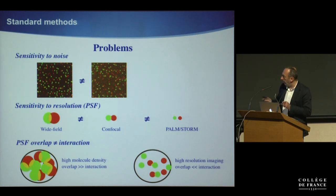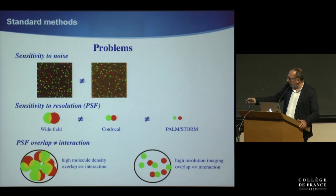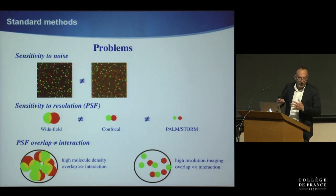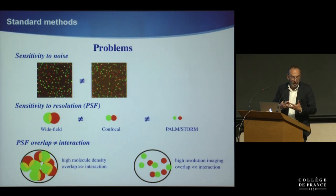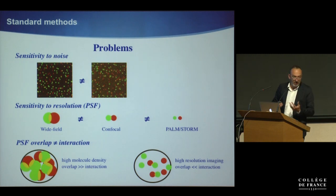Also, and most importantly, there is sensitivity to resolution. If you look at the same spots or blebs coming from a cluster of molecules, whether you look at it in wide-field microscopy with a given PSF, or confocal with a reduced PSF, or you go to super-resolution techniques where the PSF is different, the overlap between the spots — which is how you quantify co-localization — will be totally different. This is really a problem we have to address. Moreover, PSF overlap doesn't tell you exactly what the molecules are doing, because PSF overlap doesn't mean interaction.